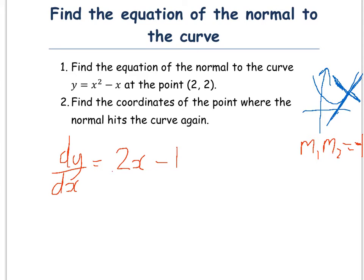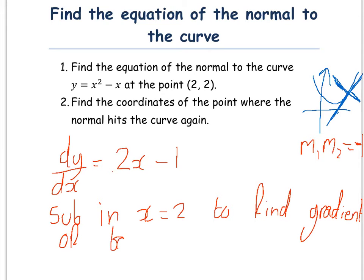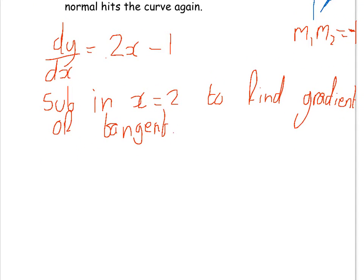Now we need to substitute in x equals 2 to find the gradient of the tangent. Let's do that. So 2 times 2 minus 1, well 2 times 2 is 4, minus 1 is 3. Now that is the gradient of the tangent.